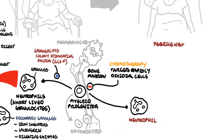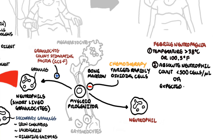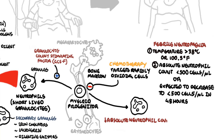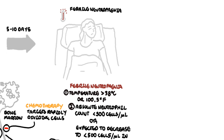Febrile neutropenia is defined as a temperature over 38 degrees Celsius or 100.5 degrees Fahrenheit with a low absolute neutrophil count of less than 500 cells per microliter, or expected to decrease to less than 500 cells per microliter within 48 hours. A low neutrophil count, especially less than 500 cells per microliter, can cause serious infections because without neutrophils as the first line of defense, serious infections can occur.